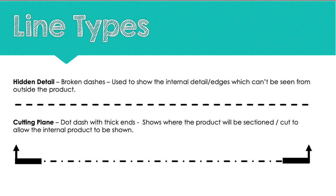The last two lines you need to know is hidden detail, which is a broken dash. The hidden detail line is used to show the internal edges which can't be seen outside the product. For example, if you have a box with a hole cut out in the top of it, you would use hidden detail in your elevation and in your end elevation to show that there is a hole going all the way through it. Otherwise, you wouldn't know it's there. Any hollowed out areas of a product or any areas that have something internal, you would use hidden detail so that we know that it's not just completely solid and that there is items within the object.